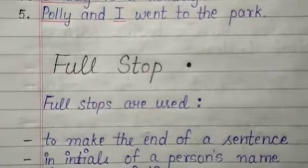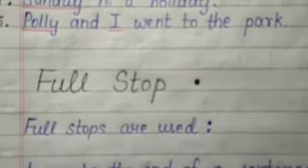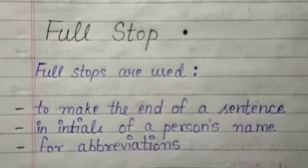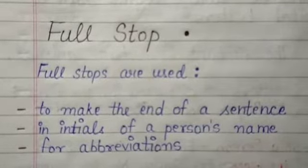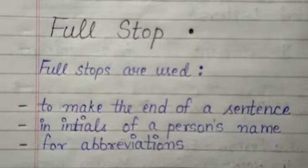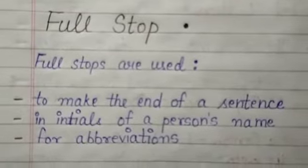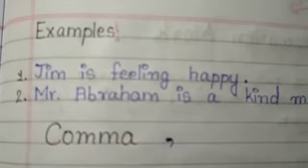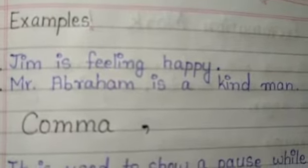Next, we have the full stop. This is the symbol of a full stop. Full stops are used to mark the end of a sentence, in initials of a person's name, and for abbreviations. Abbreviations are the short form of certain words. For example: 'Jim is feeling happy.' 'Mr. Abraham is a kind man.' In the second sentence, we can see the full stop used after initials.